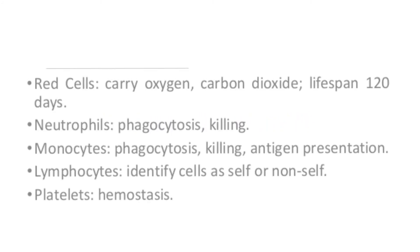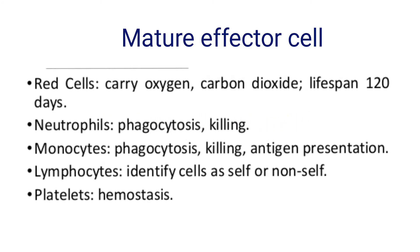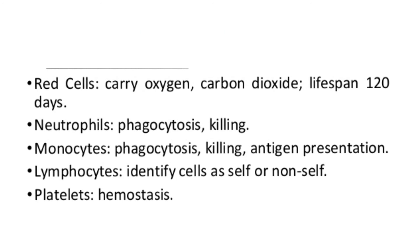The last level is mature effector cells. Red blood cells carry oxygen and carbon dioxide and have a lifespan of 120 days. Neutrophils are responsible for phagocytosis and killing. Monocytes are for phagocytosis, killing, and antigen presentation. Lymphocytes express cells as self or non-self. Platelets are involved in hemostasis.